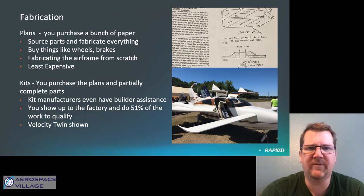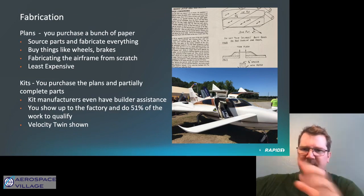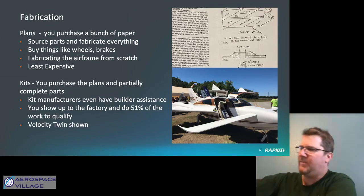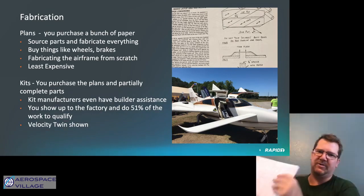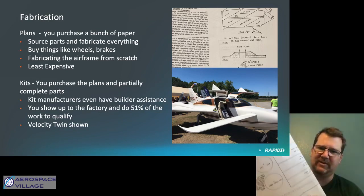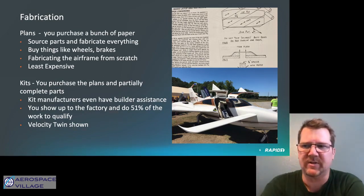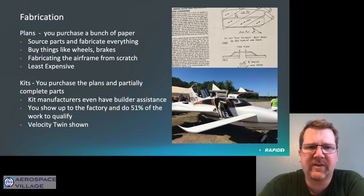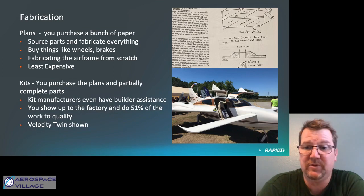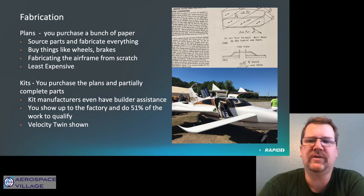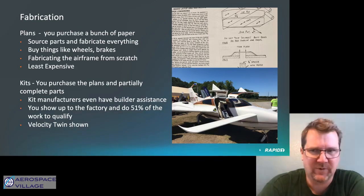So how are you going to build it? There are a few different ways. You can buy a set of plans — I actually have a set of cozy plans here, a very thick, large bound manual that comes with large-format drawings, such as drawings of the instrument panel using conventional gauges. When you buy plans, you source everything yourself: all the fiberglass, all the epoxy, all the individual metal components, the engine, the airframe, the avionics. You build the airframe from scratch using just the plans. It's the least expensive option, but also the most time-consuming.